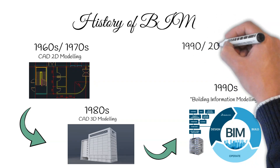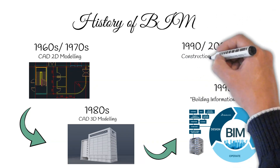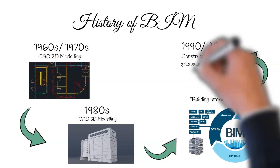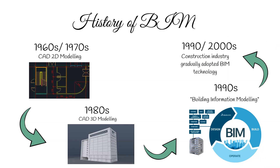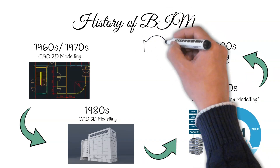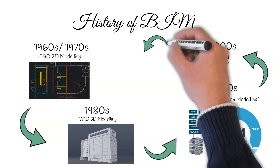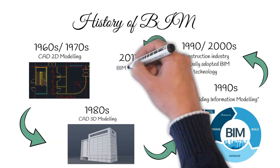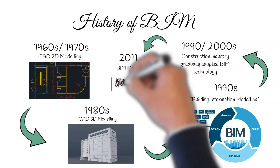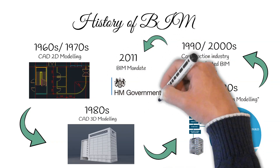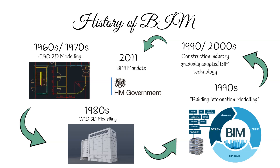Throughout the 1990s and early 2000s, the construction industry gradually adopted BIM technology. This adoption was driven by the potential benefits of improved collaboration, reduced errors and better project management. In 2011, the UK government announced a mandate for Level 2 BIM adoption in all publicly funded central government construction projects by 2016, along with the establishment of the BIM Task Group and the publication of related standards and guidelines.